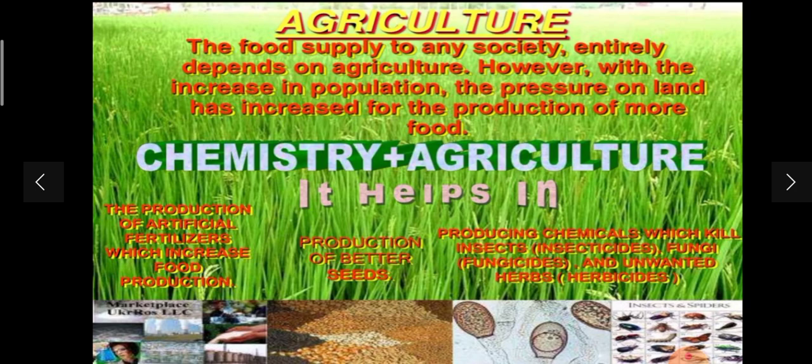The food supply to any society entirely depends on agriculture. As population increases, the supply of food becomes necessary. The pressure on land increases for the production of more food. If we add chemicals to the field, crop yield increases and the need for food is met.